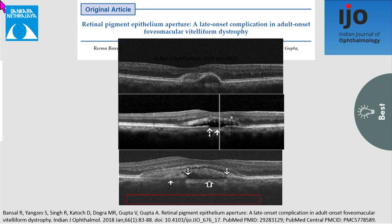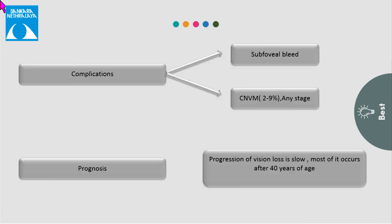This is a series of OCT from a patient. In the first OCT, you can see an optically empty space. In the second, there is formation of an RPE aperture, which increases on follow-up. Even modest trauma can lead to subfoveal bleed, so the patient should be prescribed protective glasses. CNVM can develop at any stage and should be treated with anti-VEGFs. The prognosis is good and progression of vision loss is very slow.